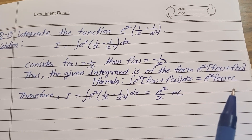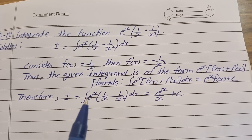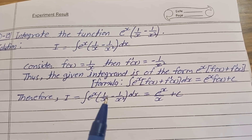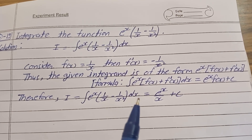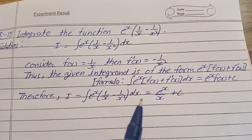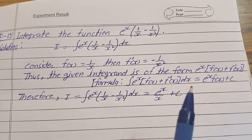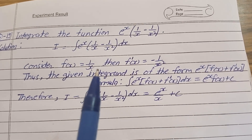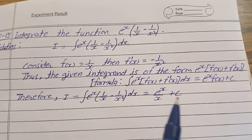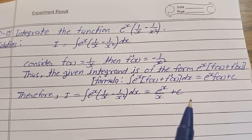Therefore I is equal to integration e^x bracket 1 upon x minus 1 upon x square dx. Putting this into the formula, f of x value is 1 upon x, so the answer is equal to e^x upon x plus c. That is the solution.